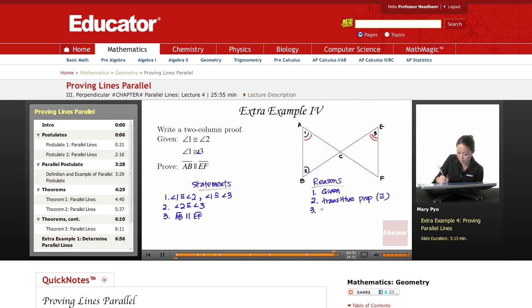So, my reason is going to be, if alternate interior angles are congruent, then the lines, now this is not the complete theorem, but you can just shorten it. Lines are parallel. So, okay, and that would be the proof.